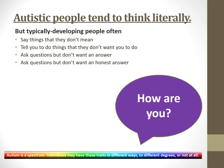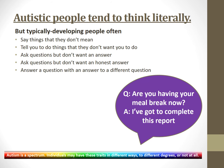They ask questions but don't want an honest answer. 'How are you?' is basically a neurotypical form of greeting — it's not actually a question and you're not supposed to answer with a detailed description of your ailments or mood. They answer a question with an answer to a different question: 'Are you having your meal break now?' — 'I've got to complete this report.' That's not an answer to that question; that's an answer to 'what have you got to do next?'